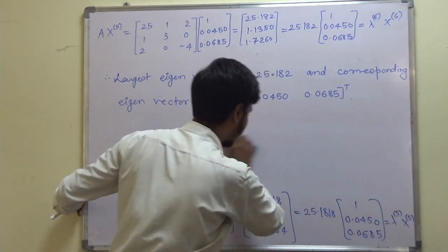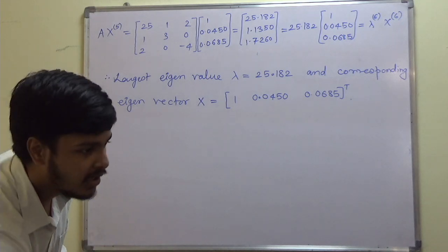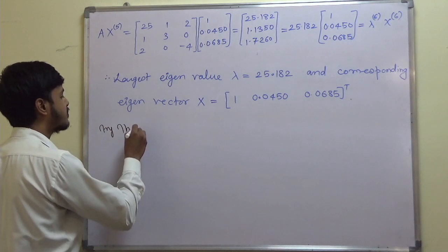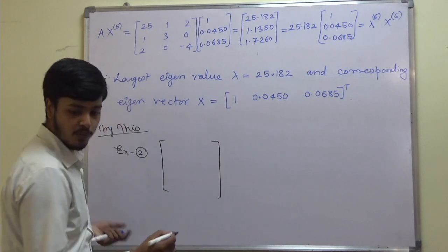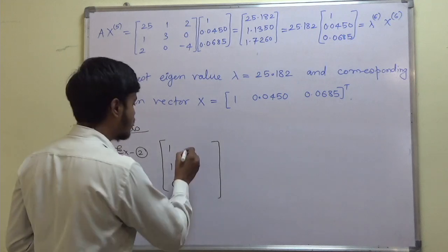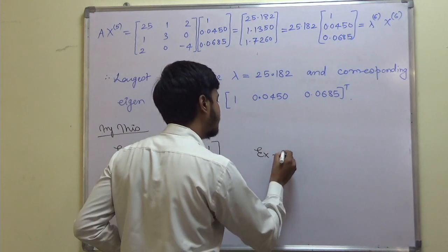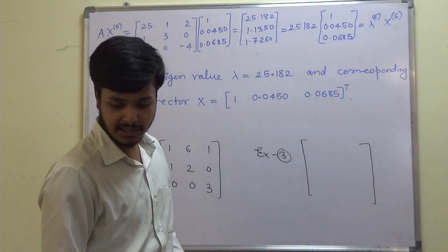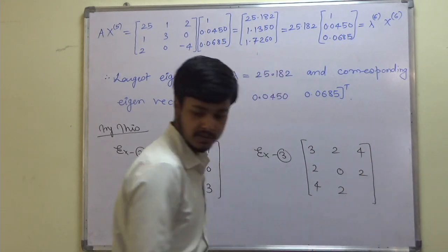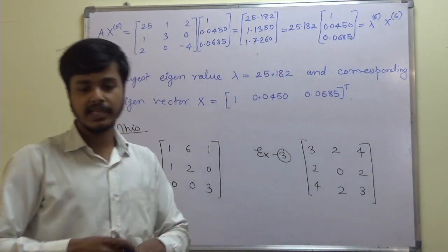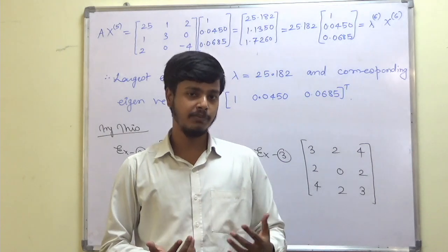As a practice problem, try finding the largest eigenvalue and eigenvector for these matrices. First: [1, 1, 0; 6, 2, 0; 1, 0, 3]. Second: [3, 2, 4; 2, 0, 2; 4, 2, 3]. These are two examples to solve at home. I hope this video lecture is making sense. Thank you for watching, keep learning and keep growing.